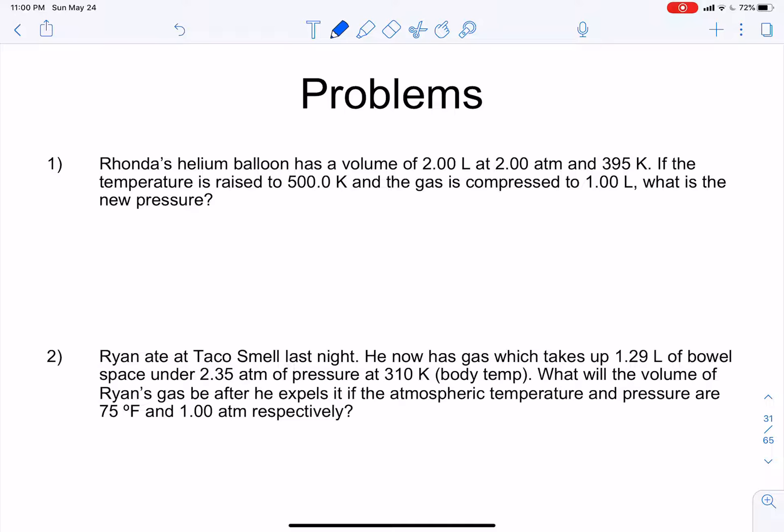So Rhonda's helium balloon has a volume of 2 liters at 2 atm and 395 Kelvin. And it says, if the temperature is raised to 500 Kelvin and the gas is compressed to 1 liter, what's the new pressure? So before we do any calculations, just look. The volume in the balloon is 2 liters. And you're compressing it to 1 liter.